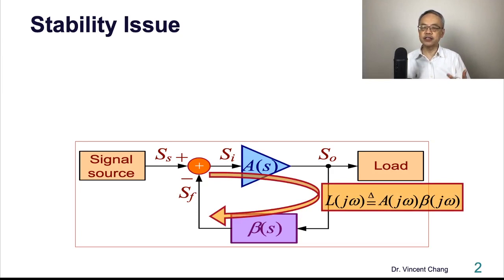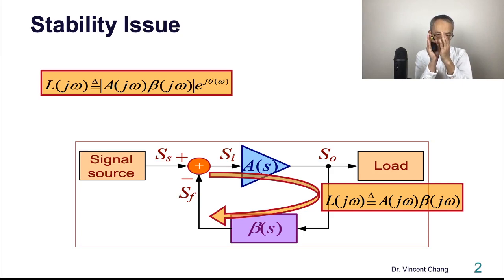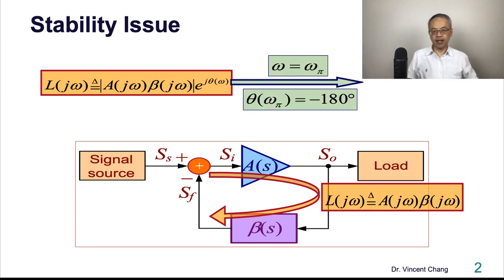So how to tackle the stability issue? Focus on the loop gain, the complex, because it's frequency dependent. Focus on the frequency dependent complex loop gain. And because it's complex, you have to consider the magnitude part and also the phase part. Focus on one frequency f_pi or omega_pi. At this frequency, the phase of the loop gain turns into 180 degrees.